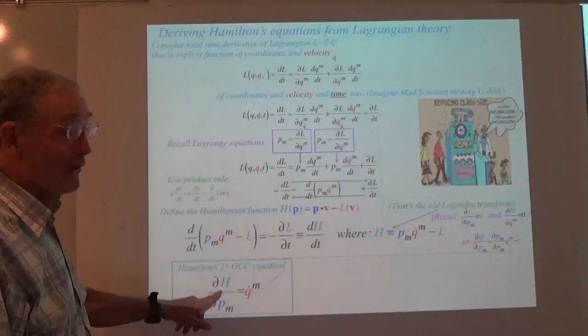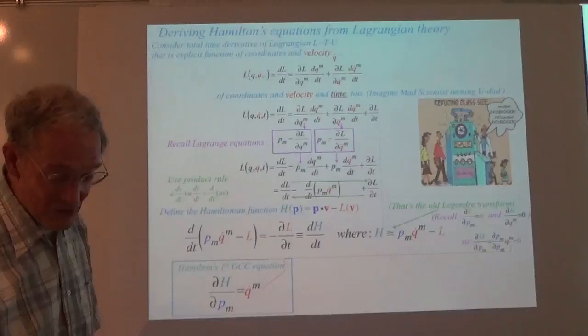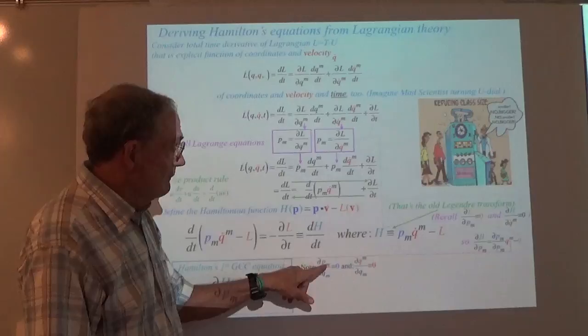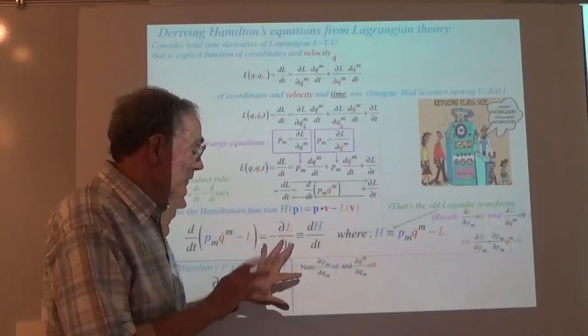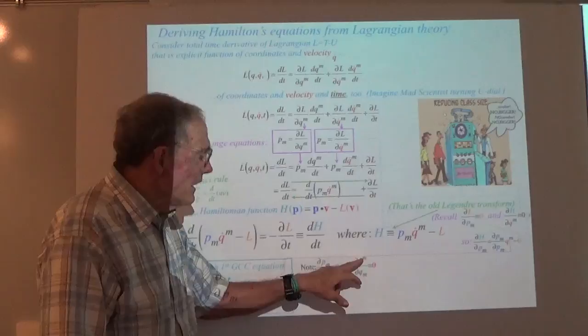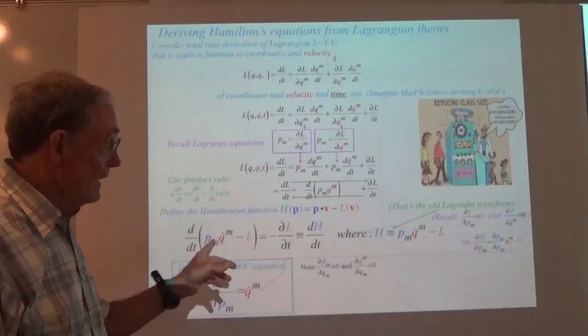We also note that the partial derivative of P with respect to Q is understood to be identically zero — they're independent variables. They're the canonical variables. And the partial of Q-dot with respect to the coordinate is also identically zero. So keep that in mind because there's velocity and momentum showing up in an action problem.